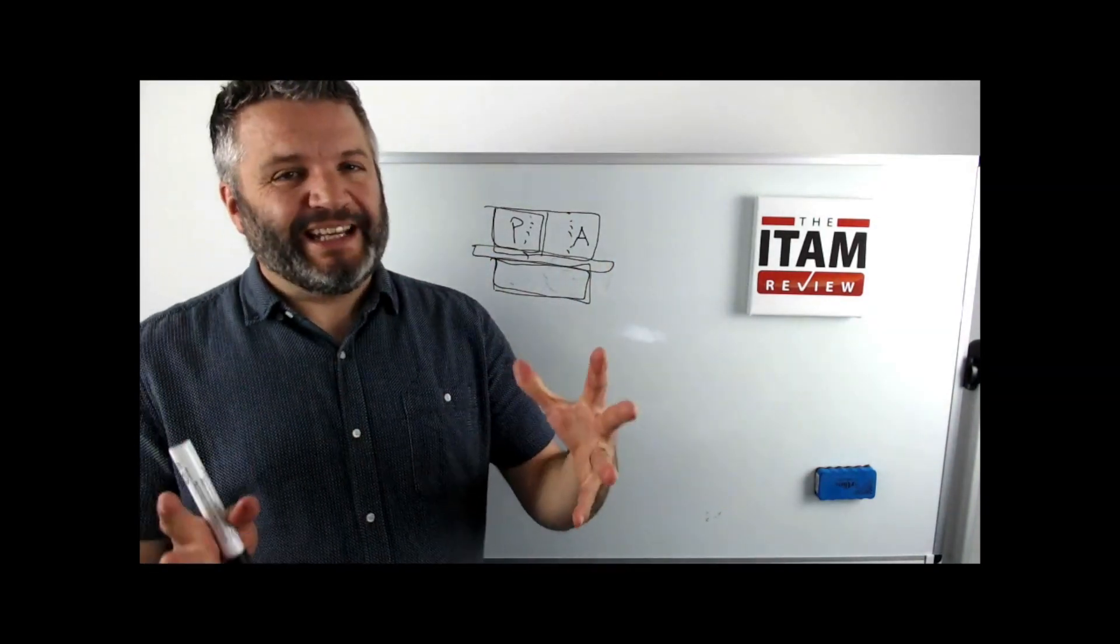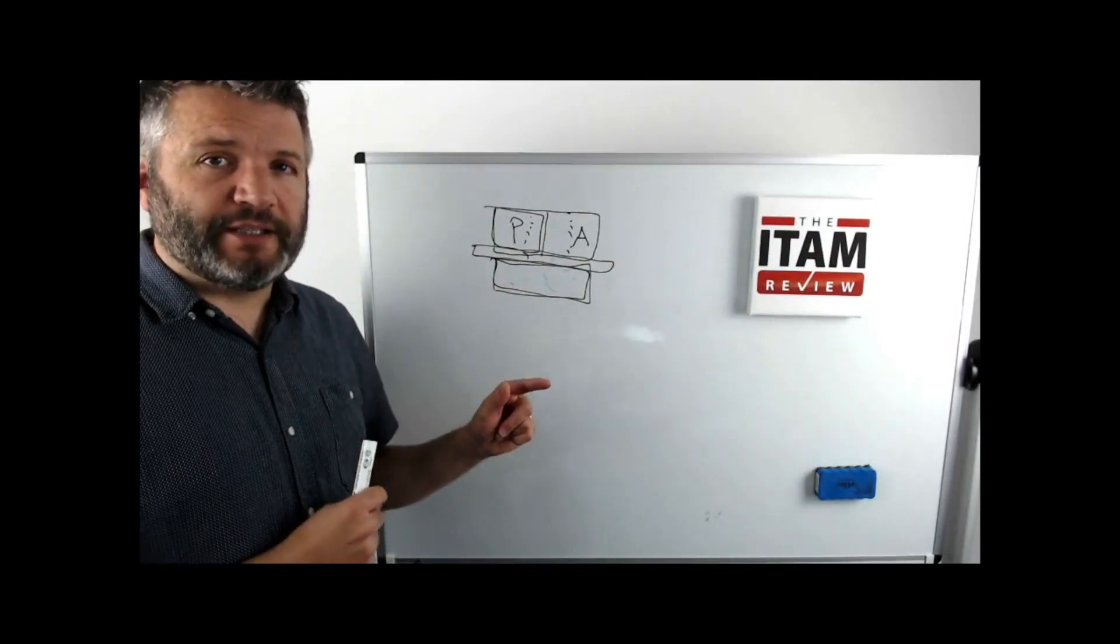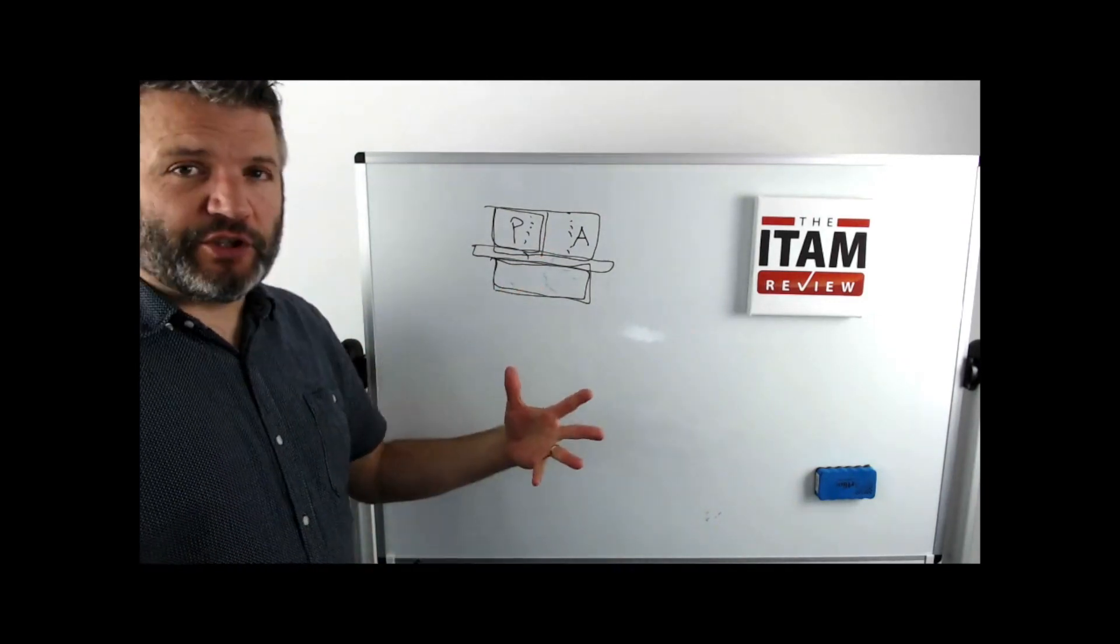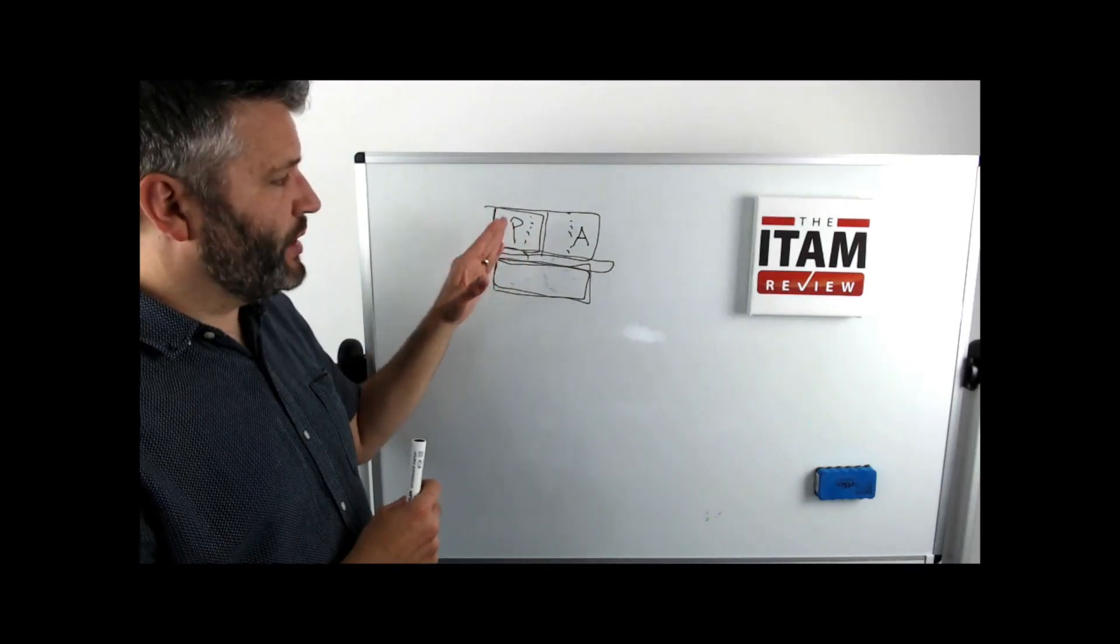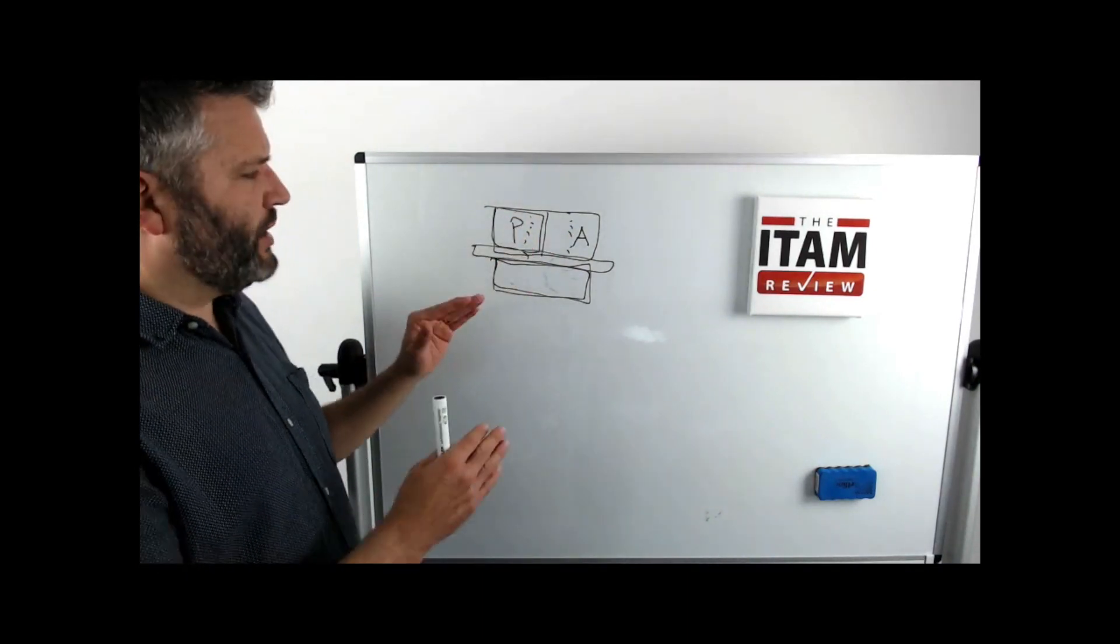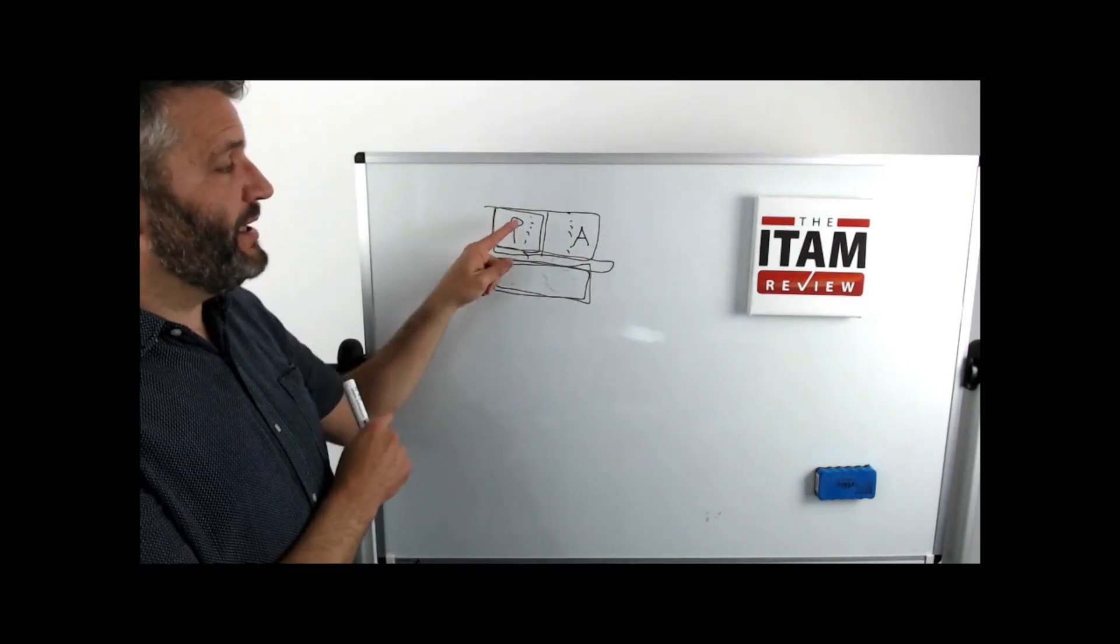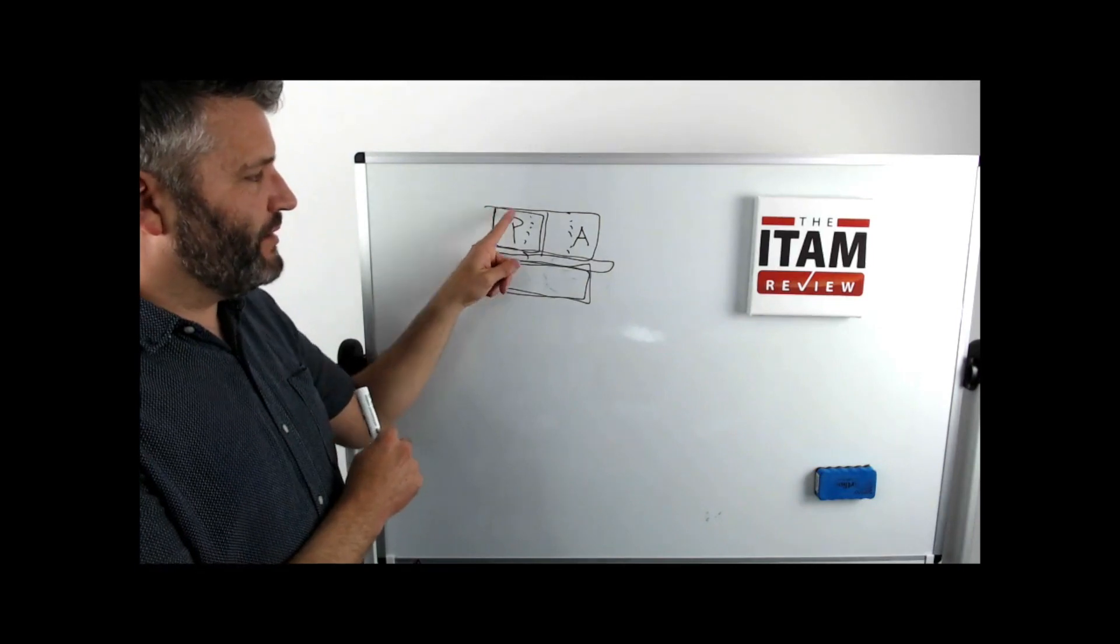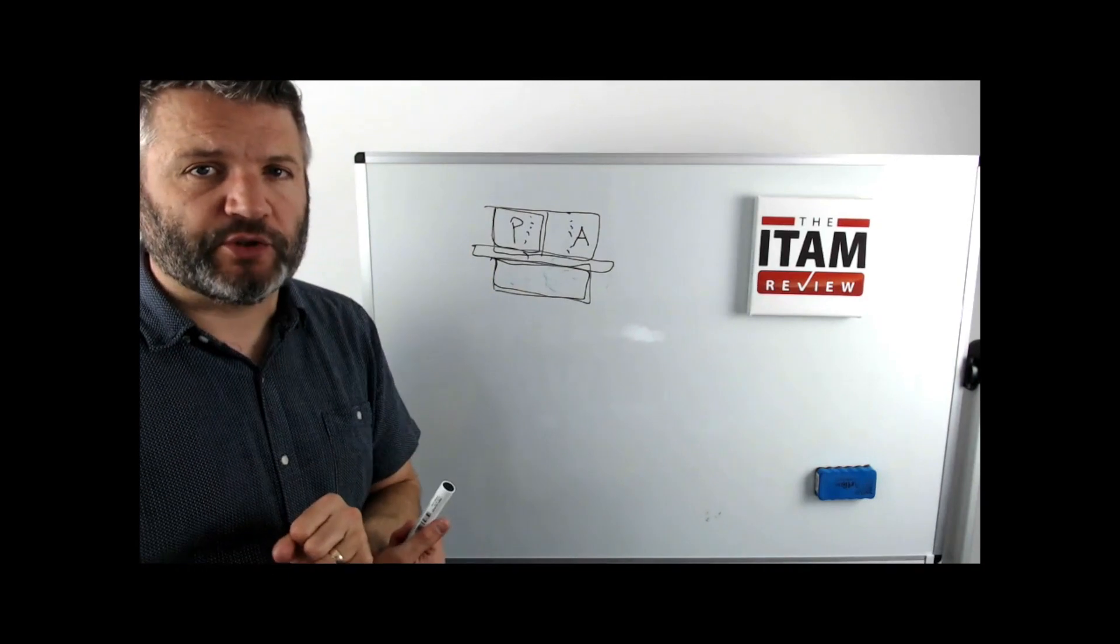Now, why is all of this important to IT asset management? Because this represents three IT assets, two virtual, one physical. And as asset managers, we need to know the relationship between the virtual and the physical because the licensing terms and the cost of these assets will typically be determined by the underlying hardware and what's going on inside these virtual systems. So we need to know about these relationships in order to be able to manage them.